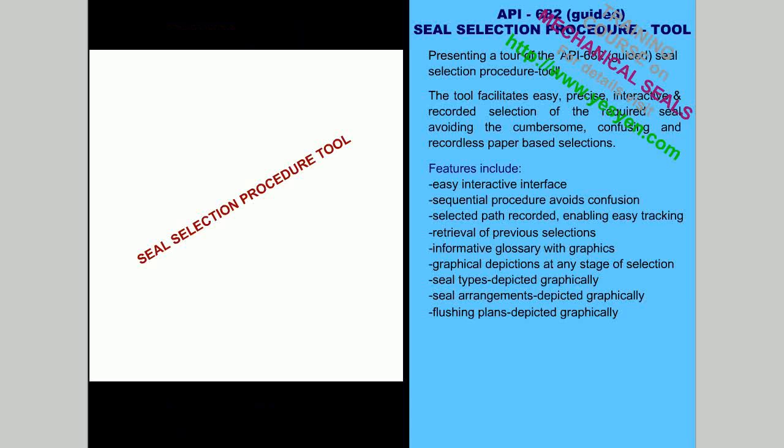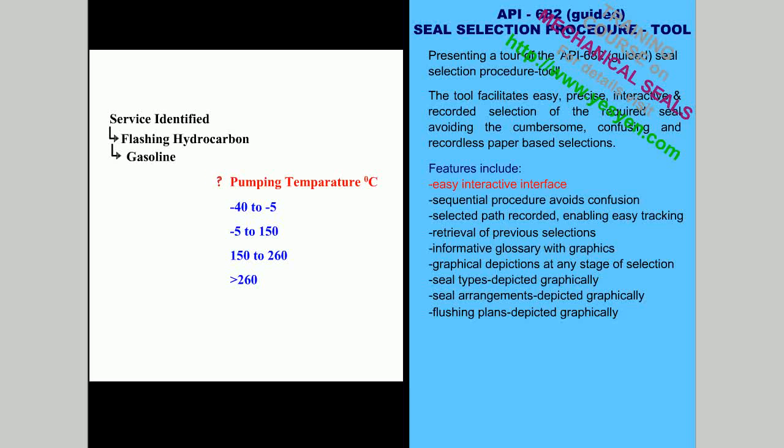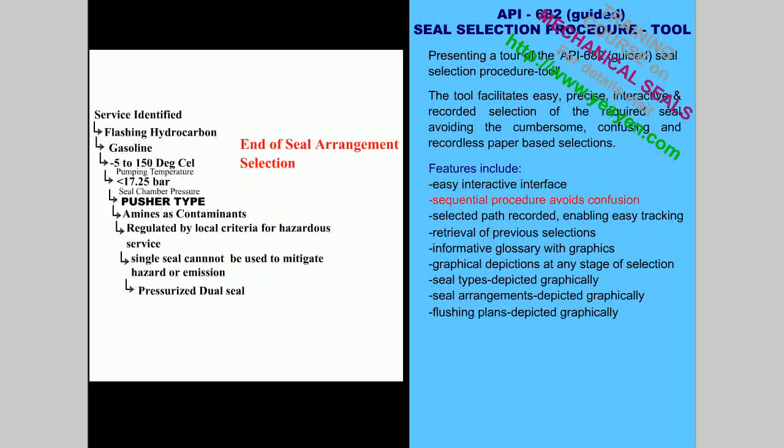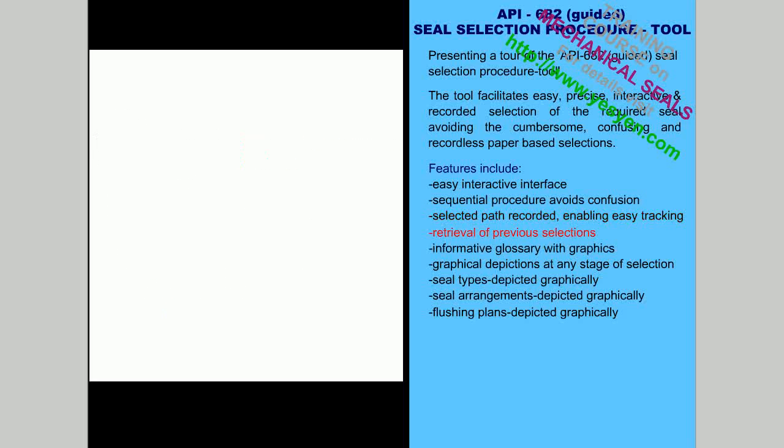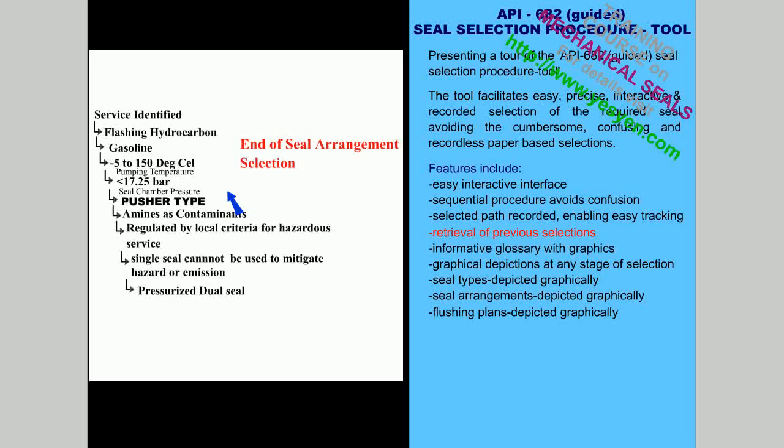Presenting a tour of the API 682 guided seal selection procedure tool. Features include easy interactive interface. Sequential procedure avoids confusion. Selected path recorded, enabling easy tracking. Retrieval of previous selections.